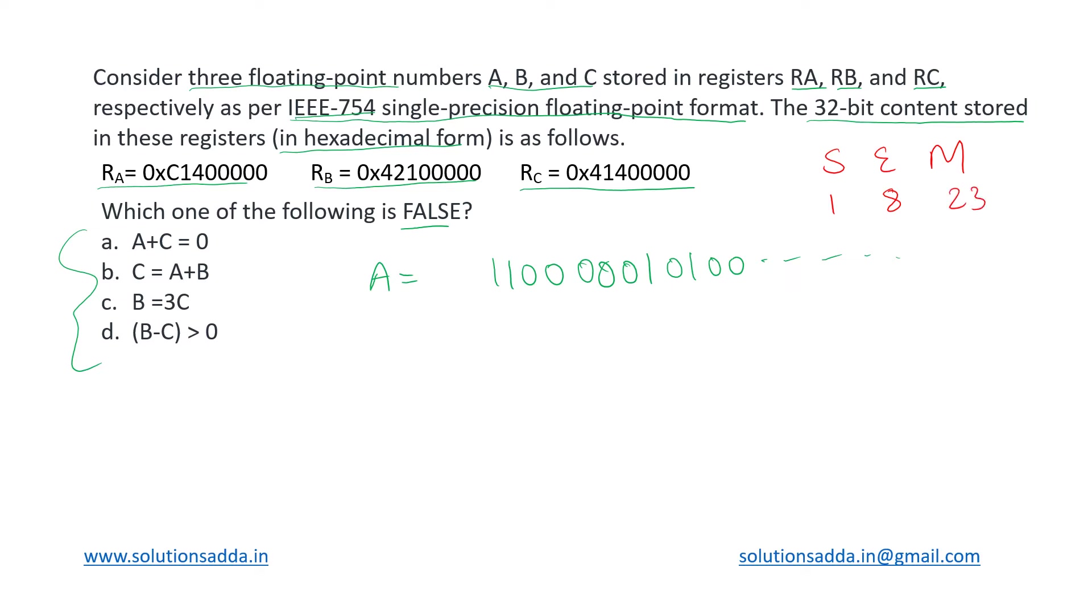How do we evaluate the number? We will be considering implicit normalization by default, so it will be minus one to the sign, then 1.mantissa into 2 to the power exponent minus 127. This 127 is the bias that we usually go with.